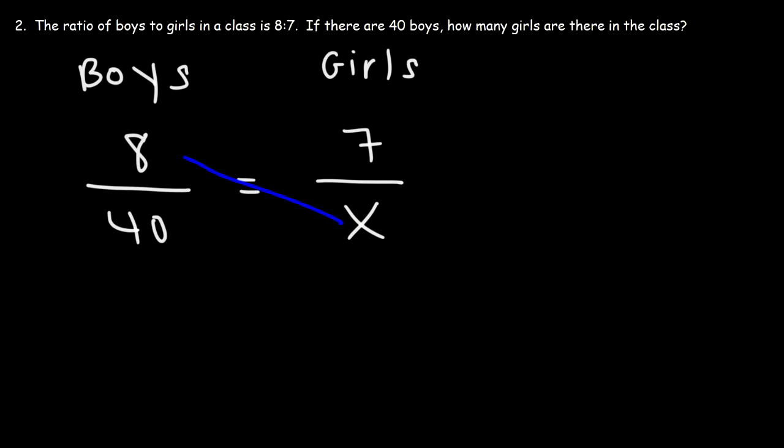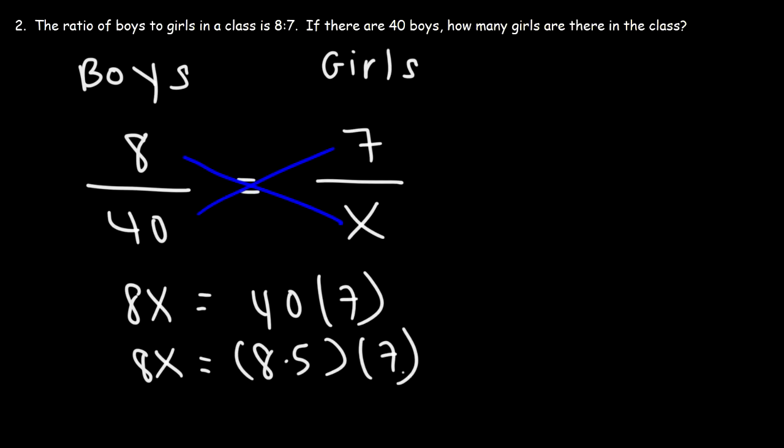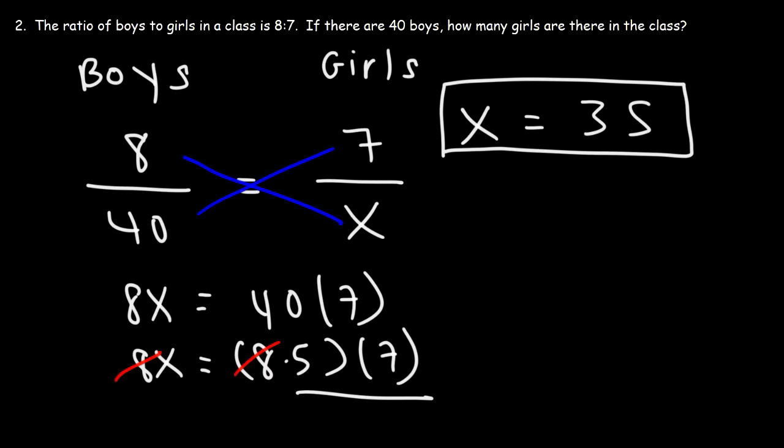Let's cross multiply. So this is going to be 8 times x and that's going to equal 40 times 7. Now we can multiply 40 by 7. 4 times 7 is 28, add the 0, you get 280. But it's easier if we rewrite 40 as 8 times 5. Notice that we can cancel an 8. So on the left side, all we have is an x left over. On the right side, it's going to be 5 times 7, which is 35. So if there are 40 boys in the class, there's going to be 35 girls in that same class.